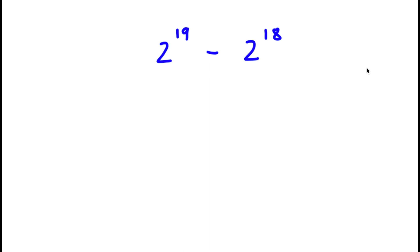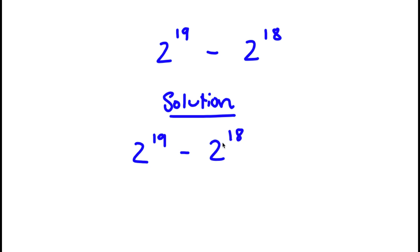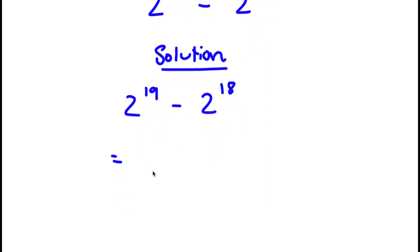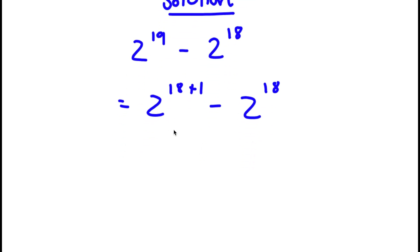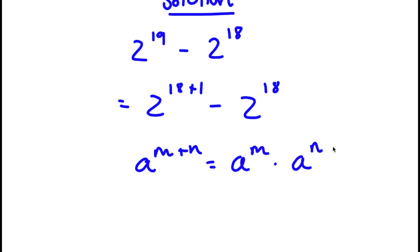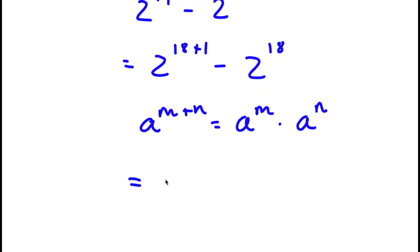Alright, so in this problem I have 2 to the power of 19 minus 2 to the power of 18. For my solution, I first start with 2 to the power of 19 minus 2 to the power of 18. Now, 2 to the power of 19 is the same thing as 2 to the power of 18 plus 1. Applying the exponent rule, 2 to the power of 18 plus 1 equals 2 to the power of 18 times 2 to the power of 1, minus 2 to the power of 18.